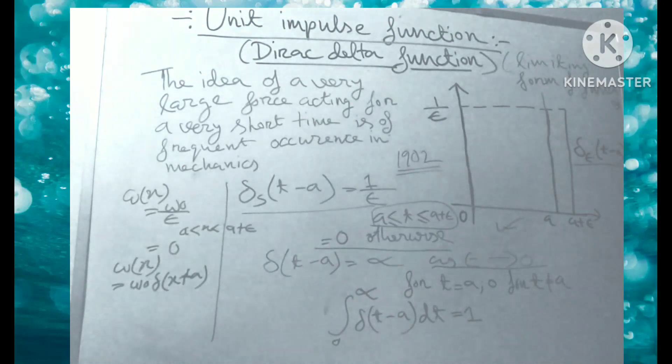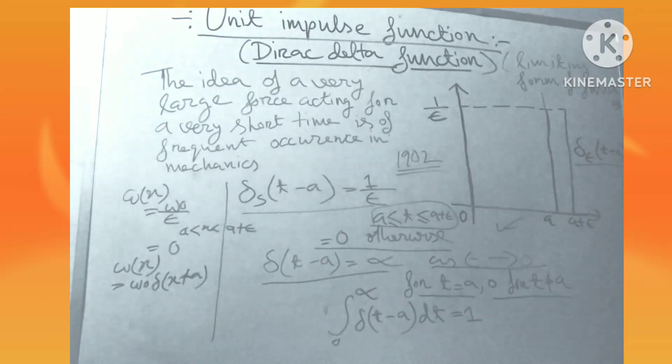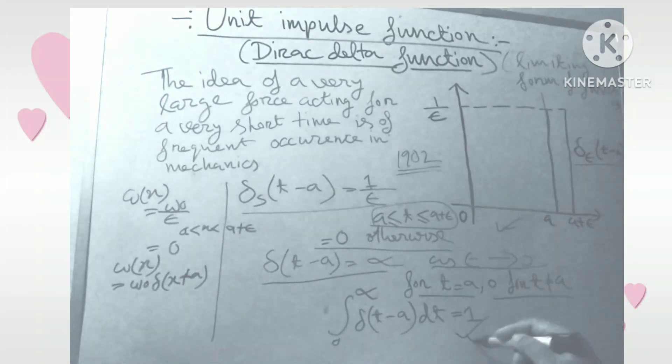Thus, the unit impulse function del t minus a equals infinity for t equals a, and zero when t does not equal a, such that the integral from 0 to infinity of del t minus a dt equals 1. This is the integration formula and this is the illustration.